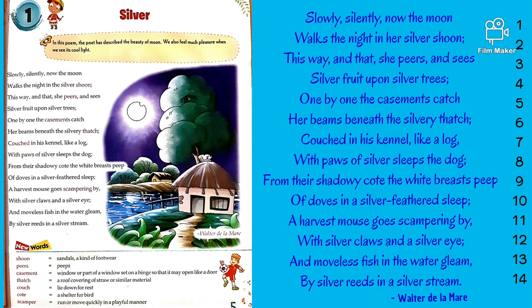The poem begins with the speaker stating that the light of the moon is casting down on earth. In the first stanza, from line 1 to 4, it is described that the moon is moving through the sky — slowly and silently, as one would expect.